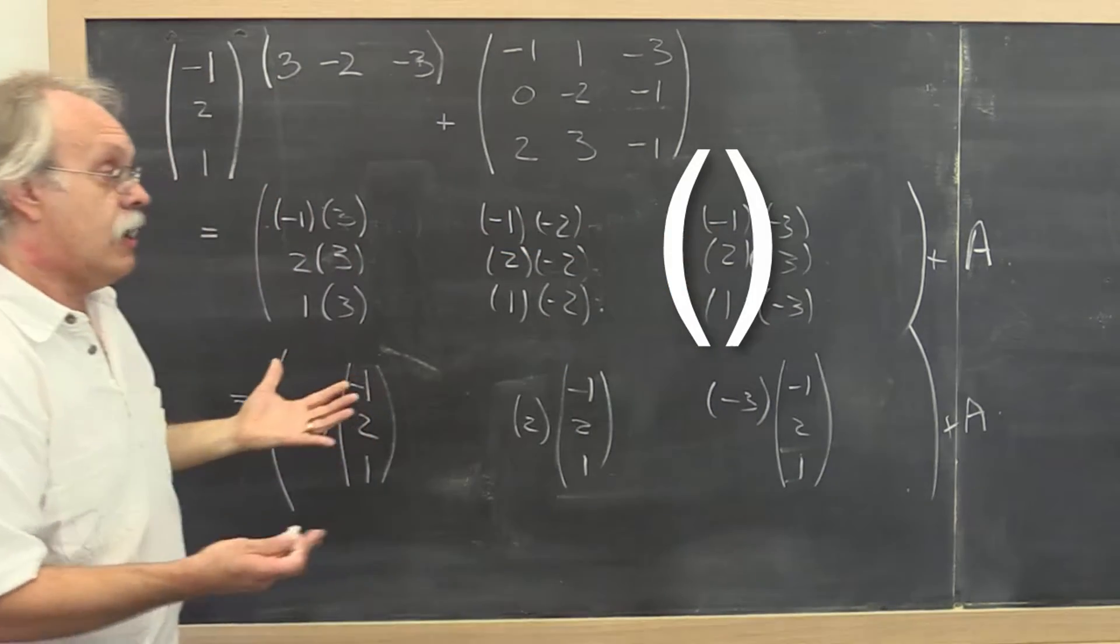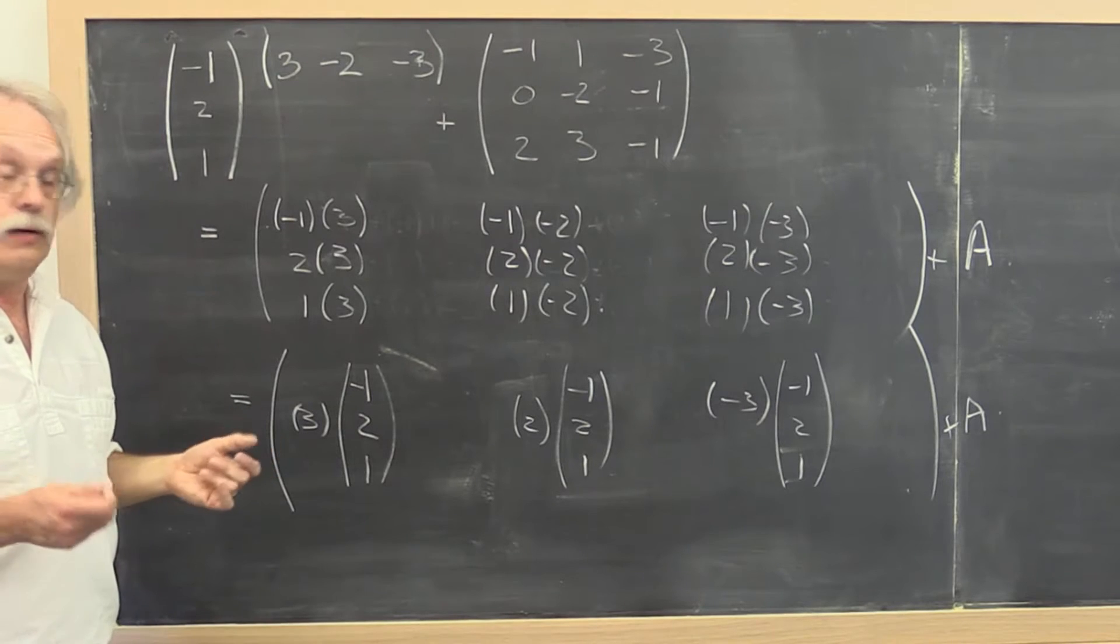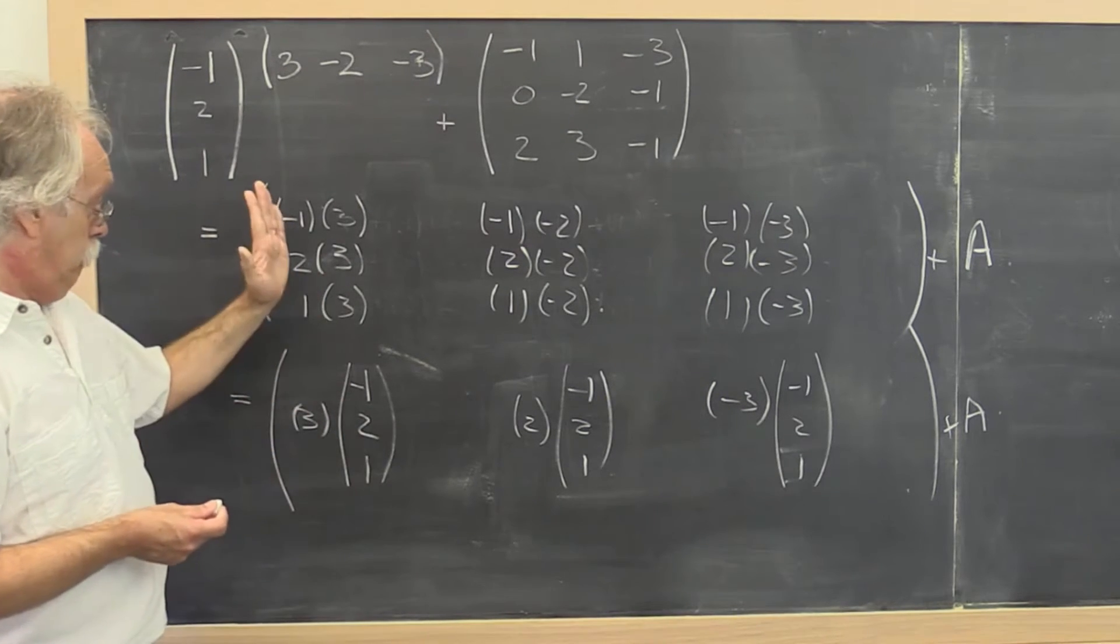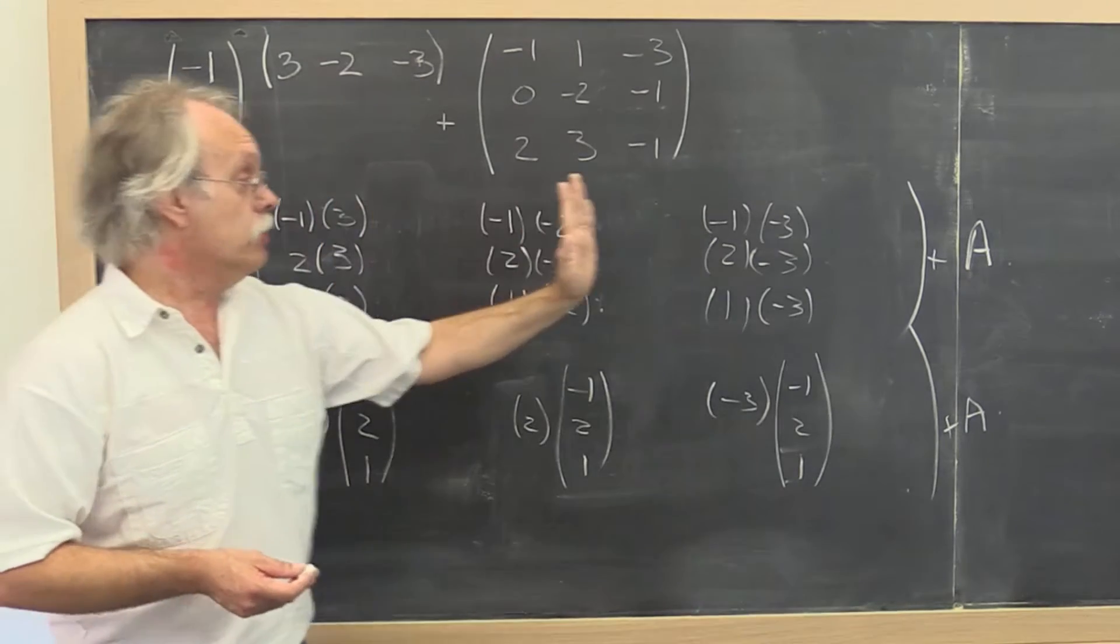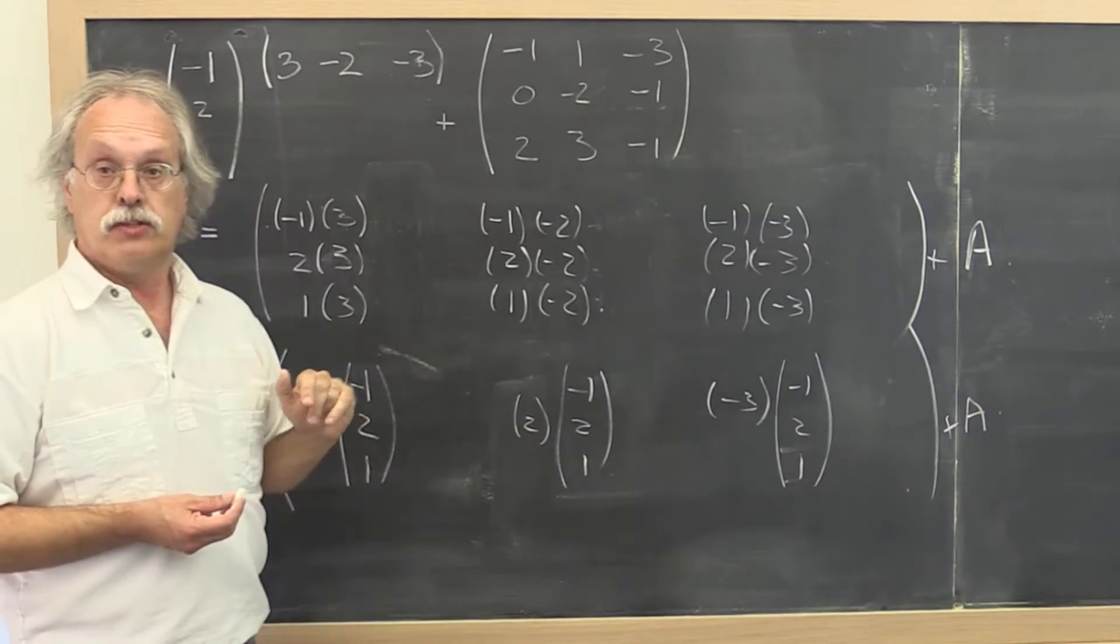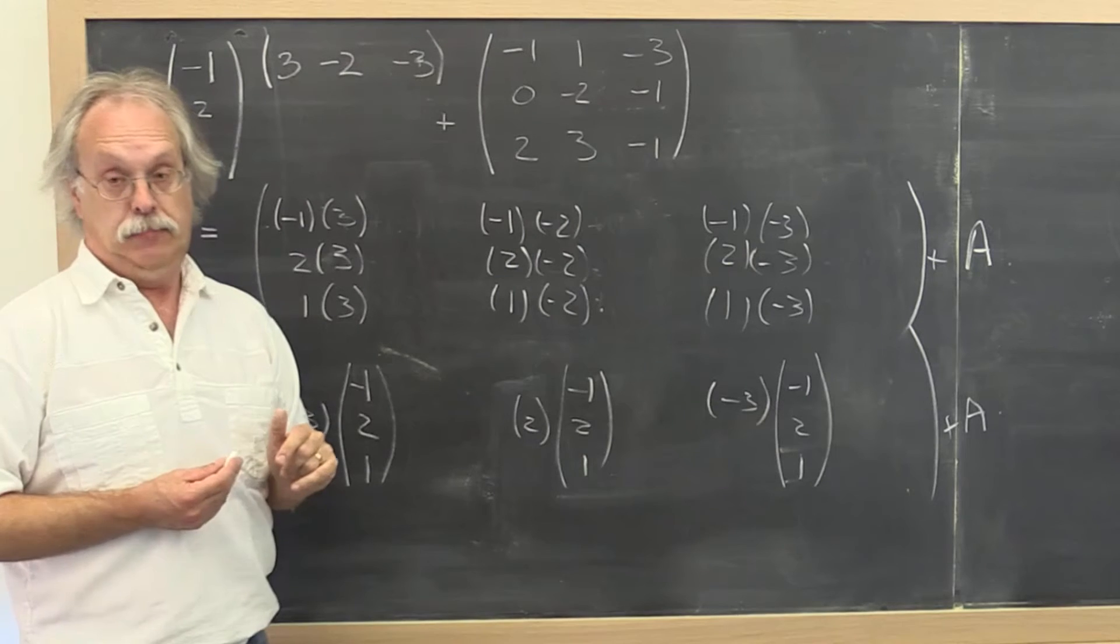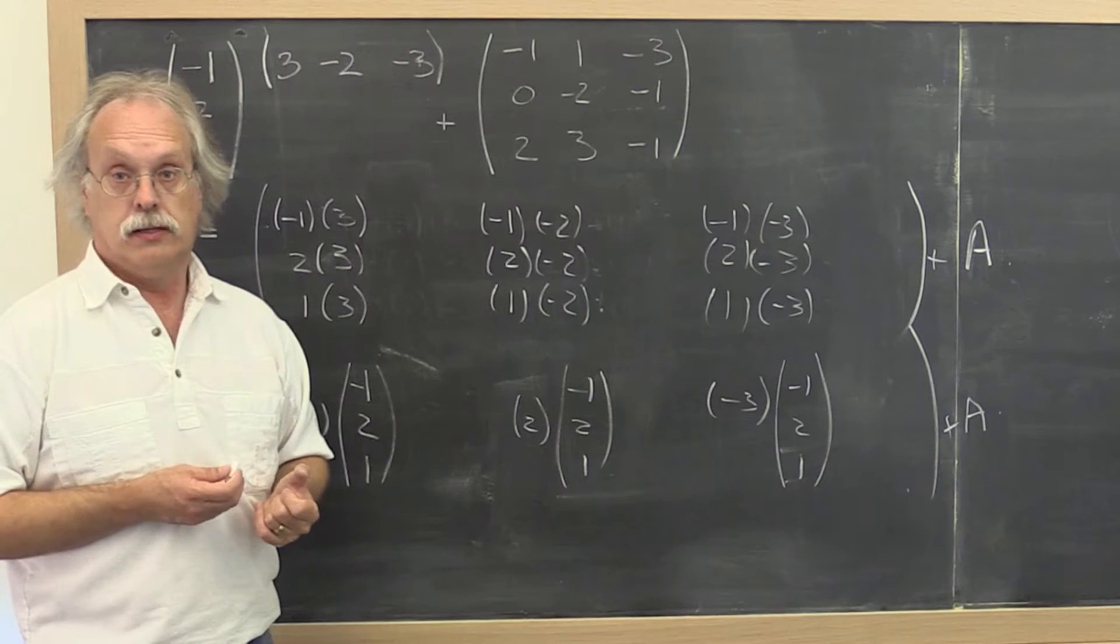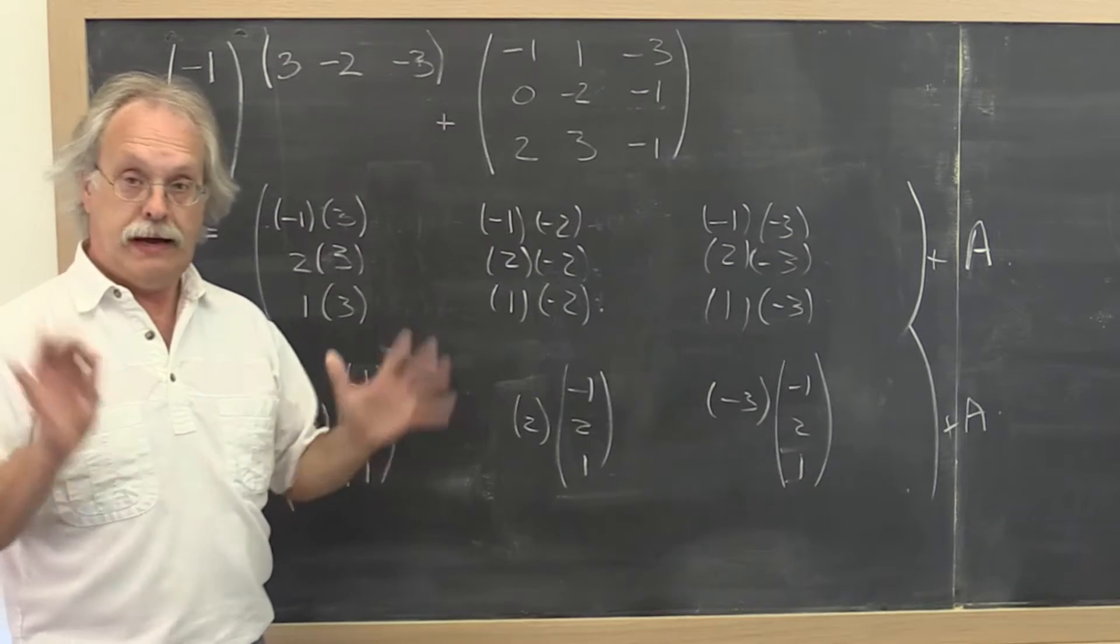Now we understand where the term rank 1 comes from. This is a rank 1 matrix. Why? Because each column is just a multiple of each other column. So there's only one linearly independent column, if you remember that terminology from linear algebra. If you don't, don't panic. You'll be okay.